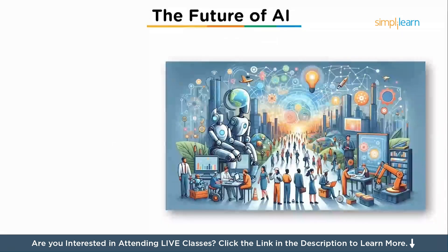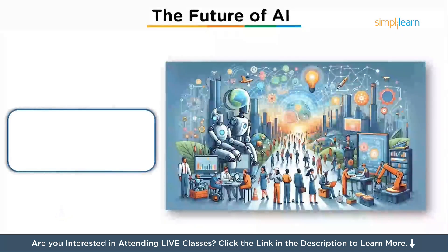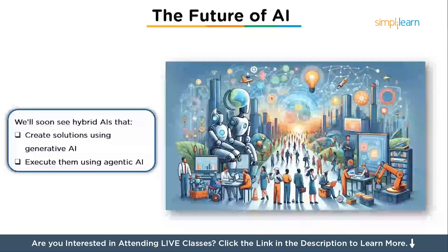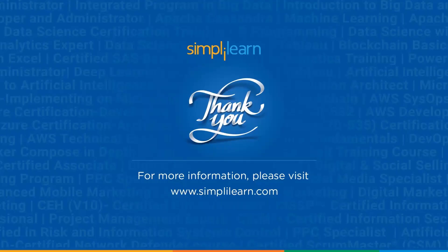The future of AI isn't one or the other — it's both. We'll soon see hybrid AIs that create solutions using generative AI and execute them using agentic AI. Imagine an AI that writes your business plan and launches your first product autonomously. But with great power comes great responsibility — we must ensure these tools are transparent, ethical and aligned with human values. That's where learners like you come in. Stay curious, stay aware, and check out the full tutorials on Simply Learn to dive deeper. The AI future is here, and it's both creative and capable.